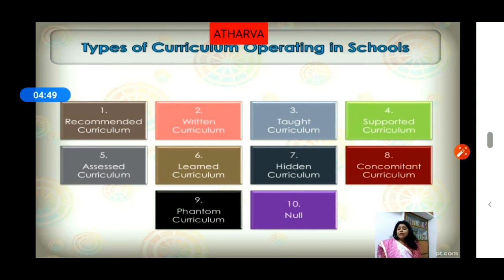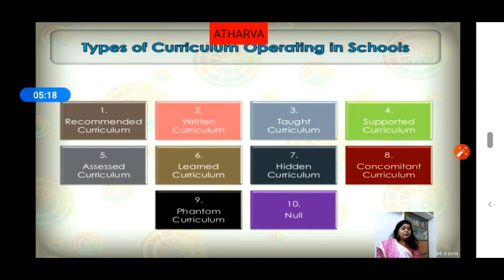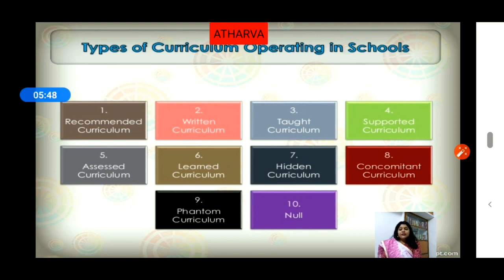Next is supported curriculum. While teaching the curriculum, we require so many supporting things — like textbooks, handbooks, computers, teaching-learning materials, and expert teachers. Whatever resources or supporting elements we require for implementing or executing our curriculum, that is known as supported curriculum. The curriculum is the same everywhere, but the outcome differs — and supported curriculum is responsible for that variation. The input is the same for everyone, but the processing part works under supported curriculum.